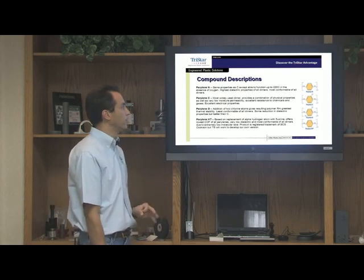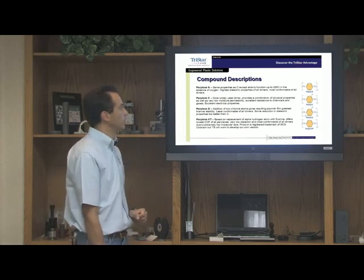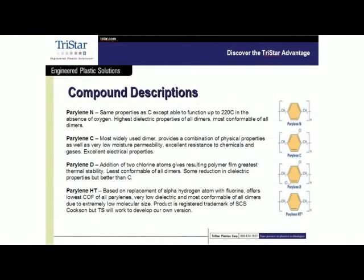There are three different types that are mainly used. The most common type is perylene N, which is full hydrocarbon. It has a basis of properties, but it is mainly used for lubricious applications. If there is an O-ring condition or a metal slide condition, usually perylene N is used.